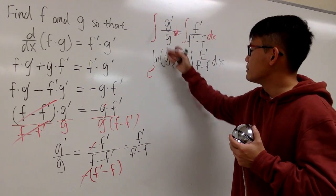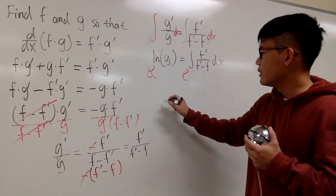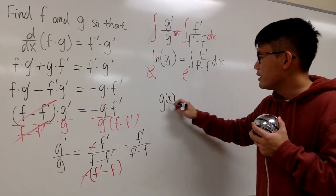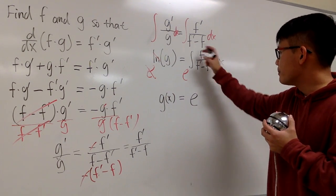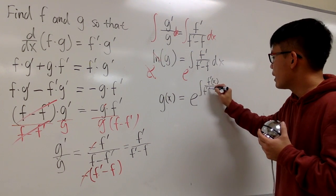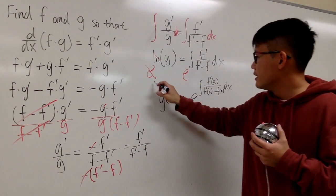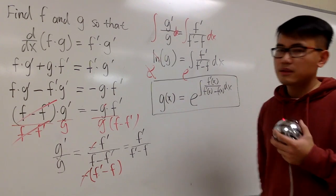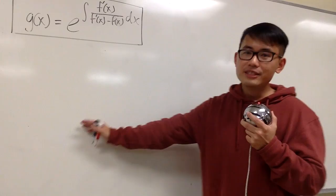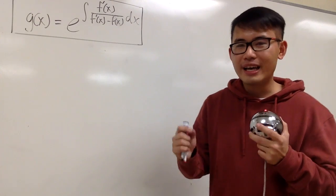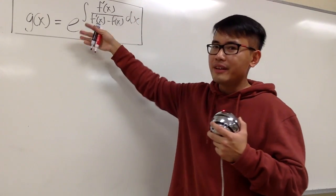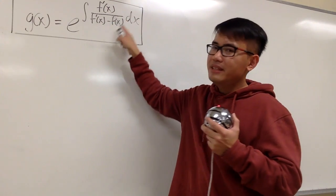We still have the integration on the right hand side, written as the integral of f prime over (f prime minus f) dx. To solve for g, I raise e to both sides so the ln and e cancel. Finally, g(x) equals e raised to the power of the integral of f prime(x) over (f prime(x) minus f(x)) dx. This is the connection between f and g.